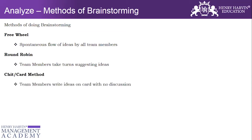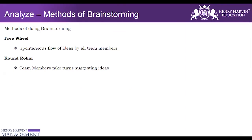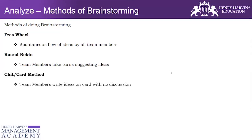The third method is called the chit or card method. In this technique, team members write ideas on cards with no discussion — it is also known as the brain writing technique. This method is used when some people are a little shy or not comfortable discussing their opinion openly. They can write their idea on a chit of paper, contributing without discussion. So the chit and card method of brainstorming is also known as brain writing, and these are the different methods of brainstorming.